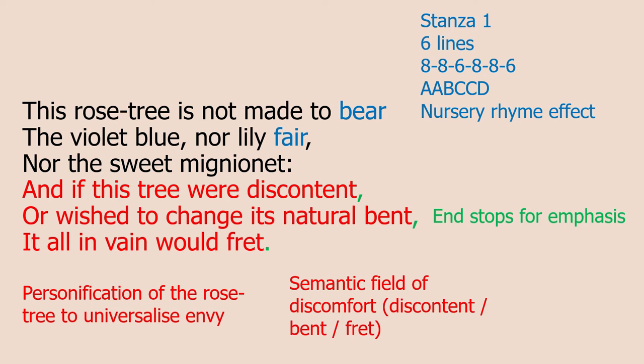To further emphasise the semantic field, Lamb uses what we call end stops in poetry — that's when you put punctuation at the end of a poetic line. Have a look at the green sections: there are two commas, one after 'discontent,' one after 'bent,' and there's one full stop after 'fret.' What this punctuation does is it forces you to stop and consider the line that you've just read, but in particular the word immediately before that piece of punctuation. So not only has Lamb used a semantic field of 'discontent,' 'bent,' and 'fret,' but by putting them next to end stops, the reader is forced to really contemplate these uncomfortable ideas. And all of these things come from being envious, so clearly we don't want to be envious because we want to avoid this discomfort.